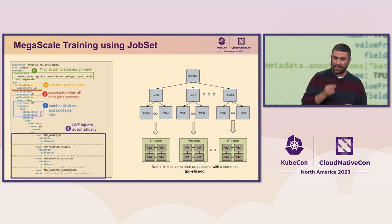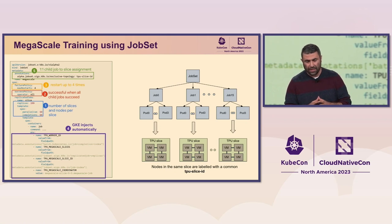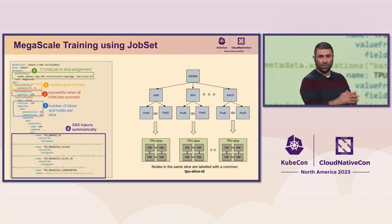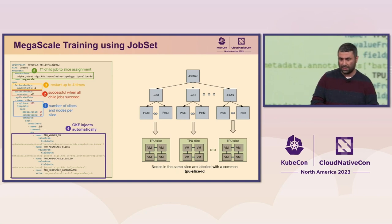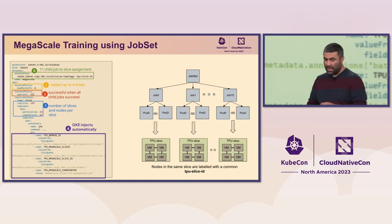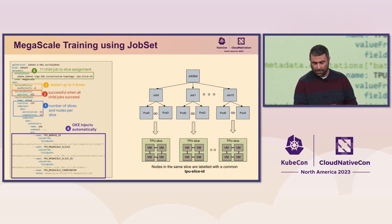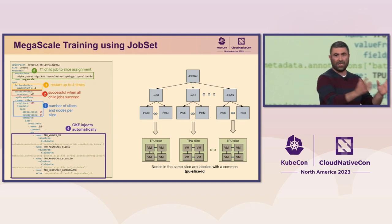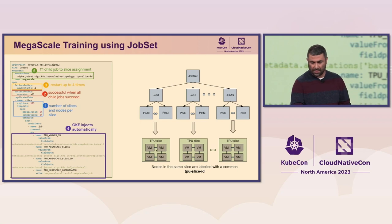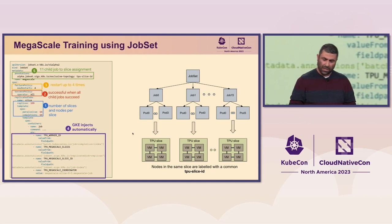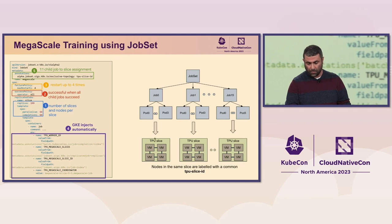With exclusive placement, what we're saying is that each job JobSet creates should ensure it lands on a unique set of nodes with a shared TPU Slice ID. On the right side, you can see each TPU Slice has a bunch of VMs with a shared TPU Slice ID — for example, TPU Slice ID 0, 1, and 2. With JobSet, while specifying this parameter, it ensures that each job, for example Job 0, has its pods land only on one slice, and only Job 0 will land on that slice — it repels all other jobs.